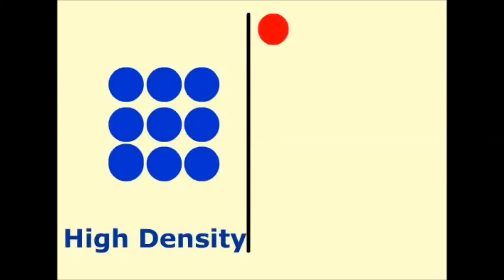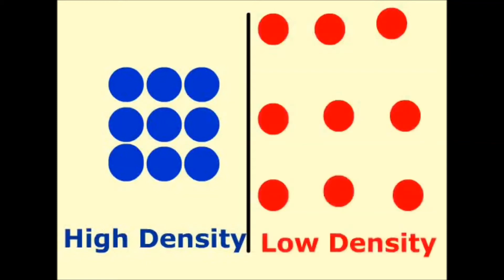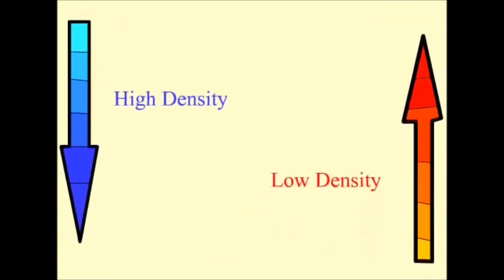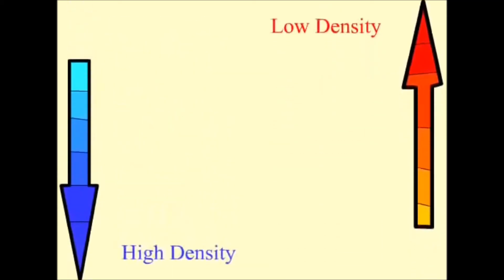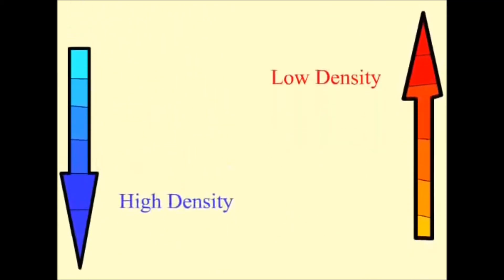And you also learned that cool fluids always have a higher density because their particles are energized. Therefore, the particles have to be cramped together. Whereas, hot fluids will always have a lower density because their particles are energized and moving. Therefore, they are spread apart from each other. Low density fluids, when surrounded by high density fluids, always rise. And high density fluids, when surrounded by low density fluids, always sink because of their varying densities.